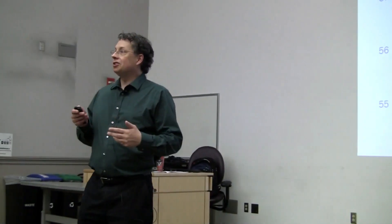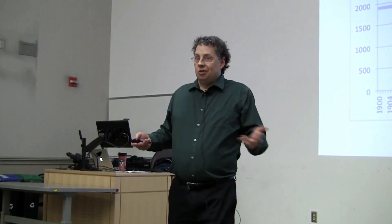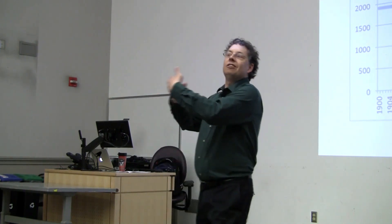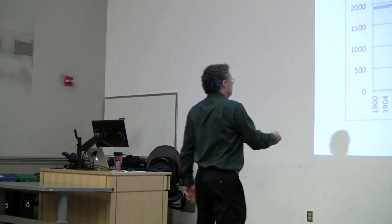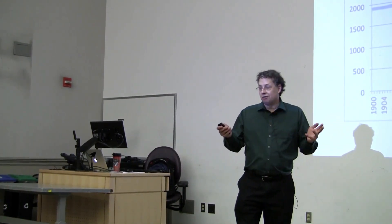Bloomberg News thinks so too, and they put together this graph. My interpretation is that Parmenides was right — Parmenides was a pre-Socratic philosopher who thought that time was an illusion and doesn't actually pass. This graph proves it: down here we've got the year from 1900 to 2040; here we've got the year from 0 to 4,000. Looks pretty flat to me. The point is you can make anything look like nothing is happening if you have the freedom to include zero capriciously in your graphs.